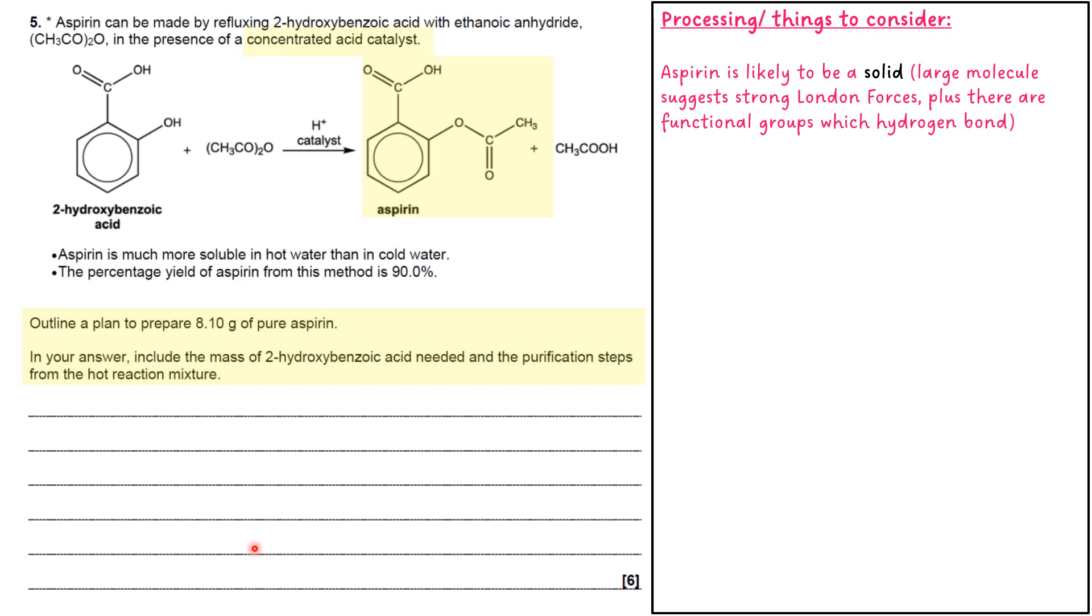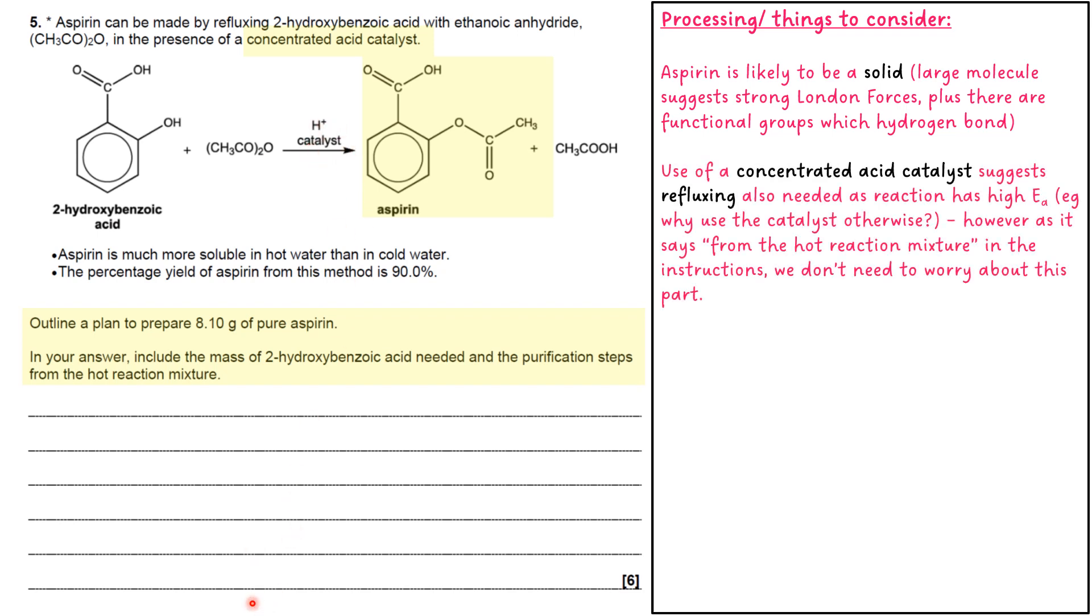It mentions a concentrated acid catalyst and also says it in the equation. Normally that would mean you might want to put something about it being a refluxed reaction mixture because obviously high activation energy is probably in place. Why would you use the catalyst otherwise? But because it says 'from the hot reaction mixture' it means they've already recognized that refluxing or heating will take place. So there's no point in putting that down because they've already told you it's a hot reaction mixture. Don't worry about putting anything down in your answer for that.